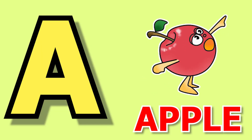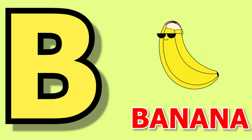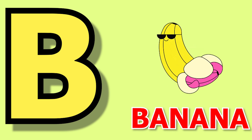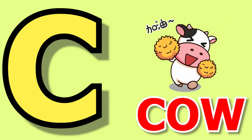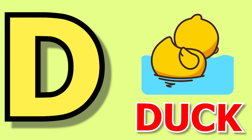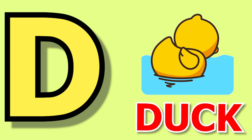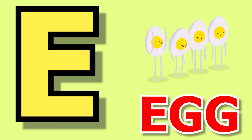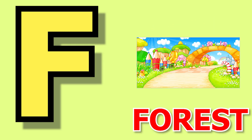A for apple, apple means sheep. B for banana, banana means kela. C for cow, cow means gay. D for duck, duck means buttock. E for egg, egg means under.